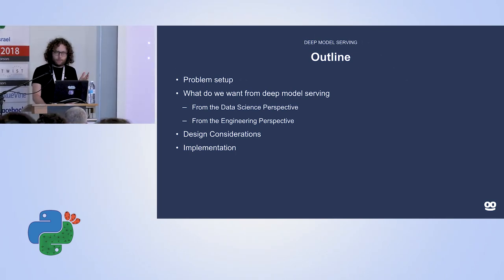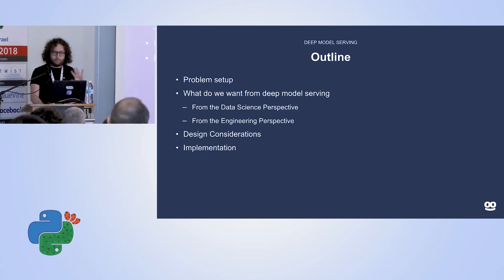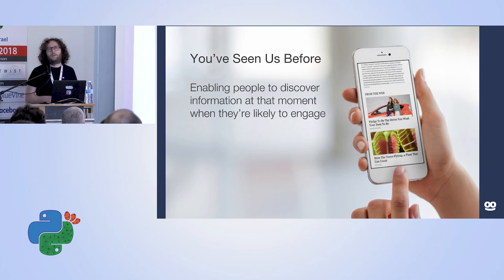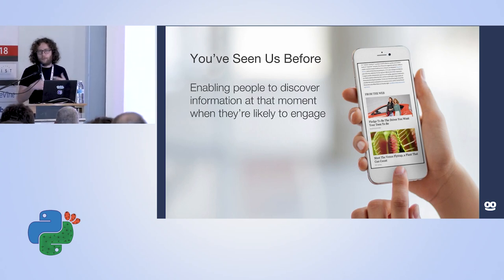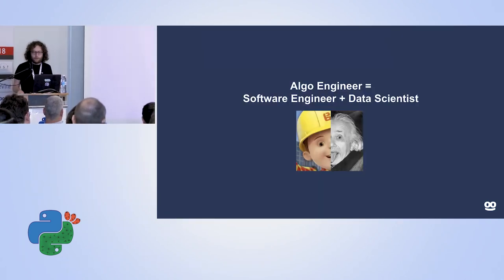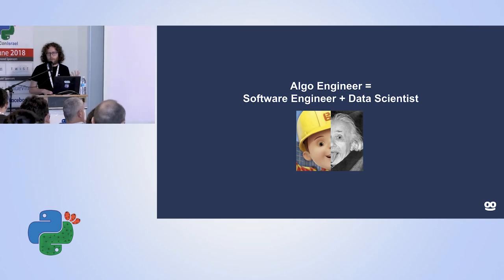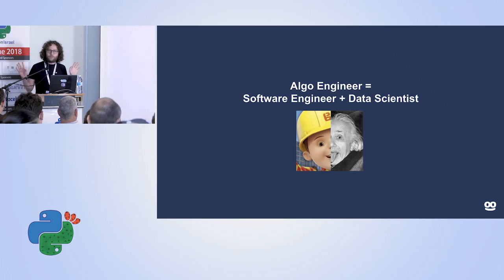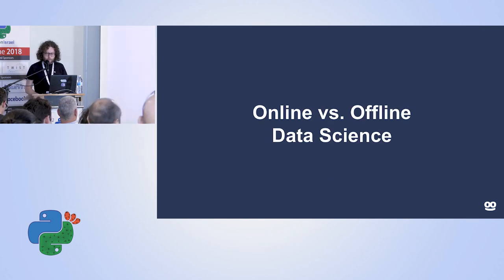I'm going to start by talking a bit about myself so you can calibrate my biases and take what I say with a grain of salt. What Taboola does is recommendations — the main problem we solve. We need to quickly pick one of the items we can recommend, relating to who you are, the content, and what's best for us. It's a large-scale recommendation system, and our team does both: everybody is both the algorithms person and the engineering person.